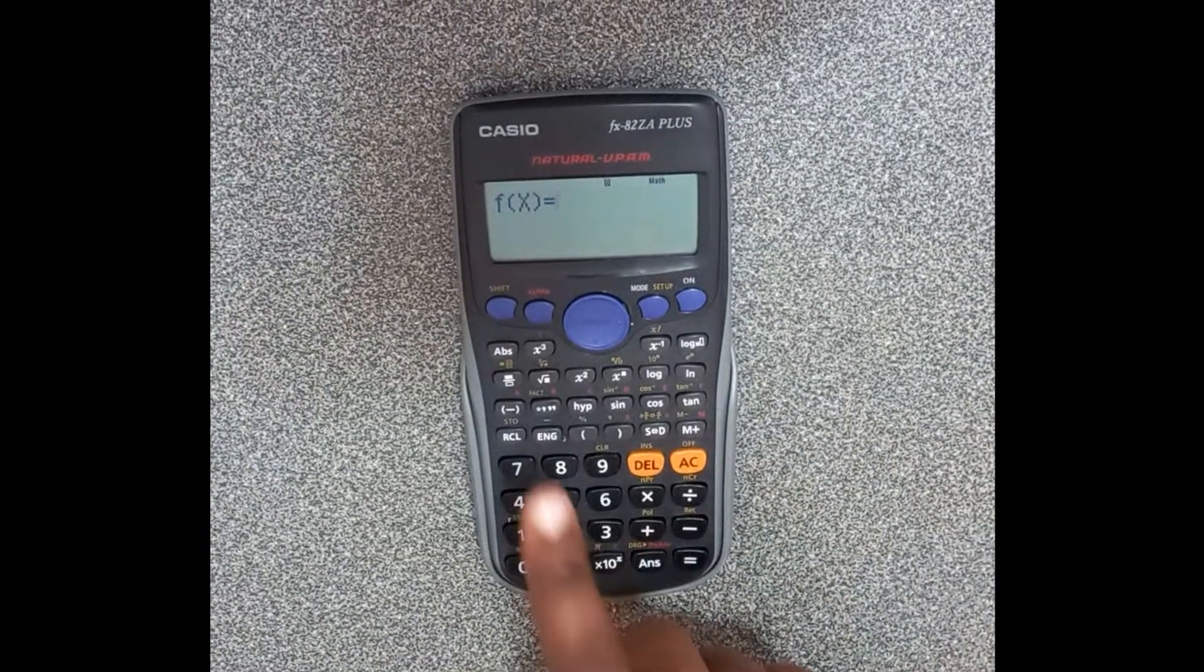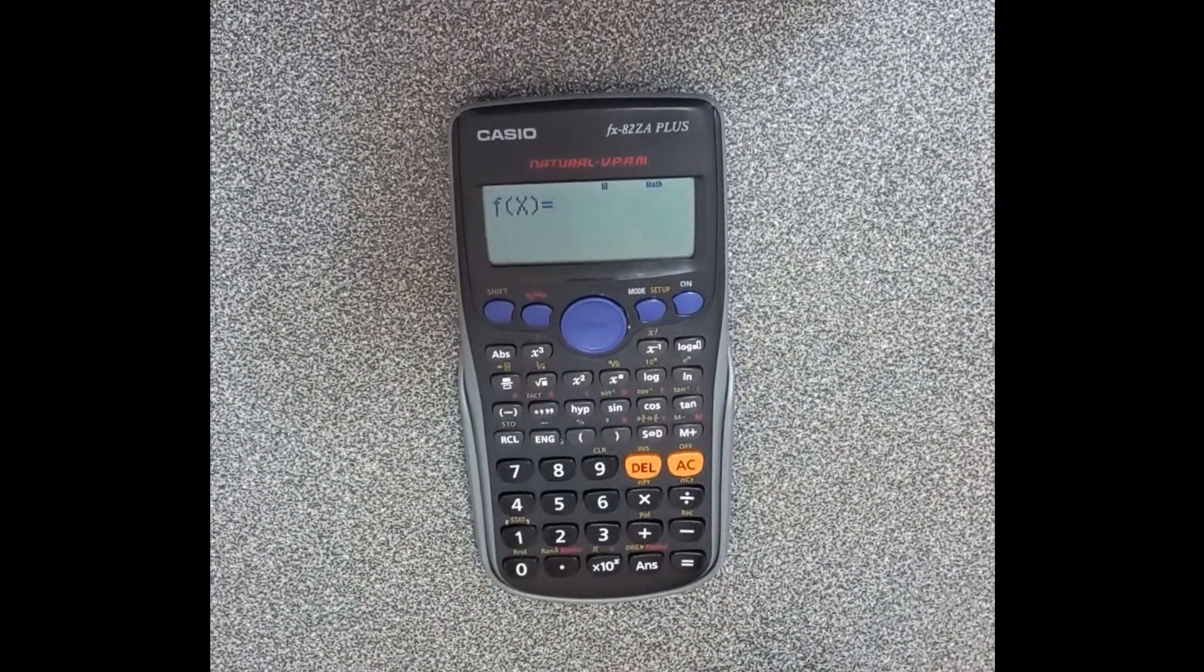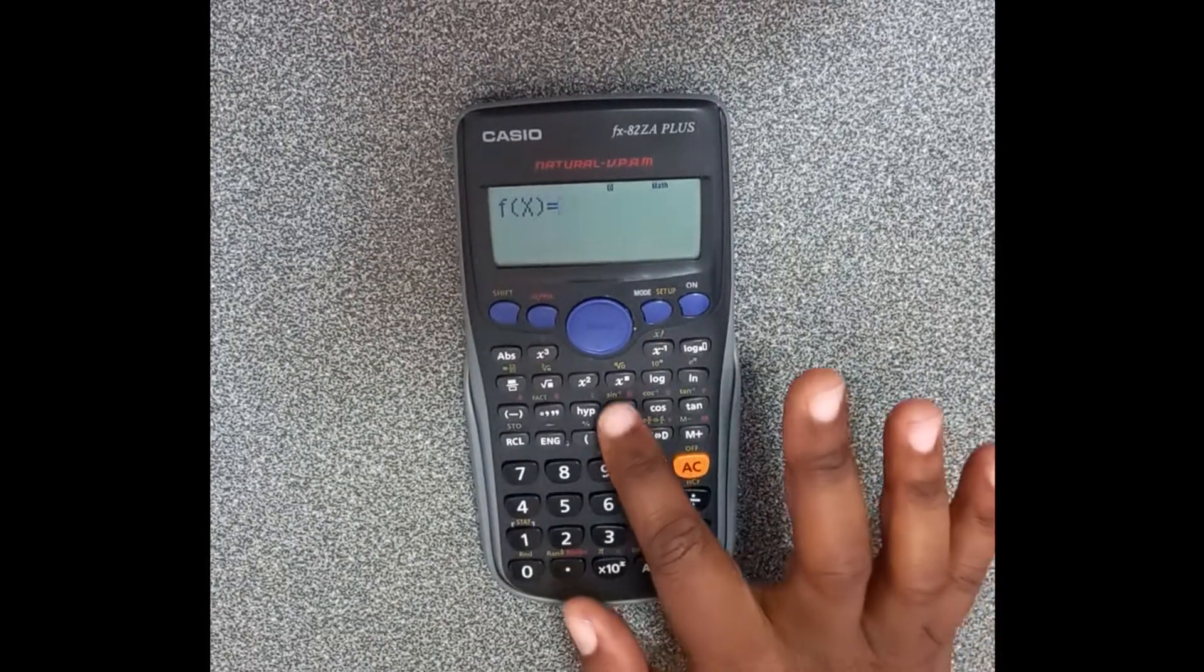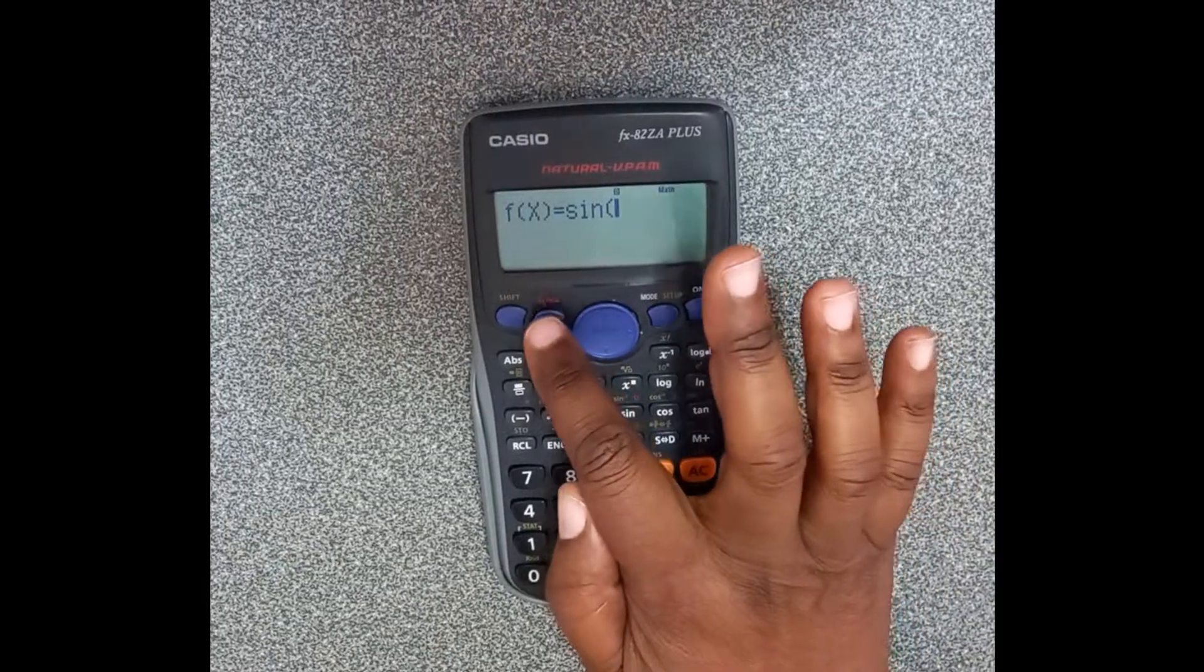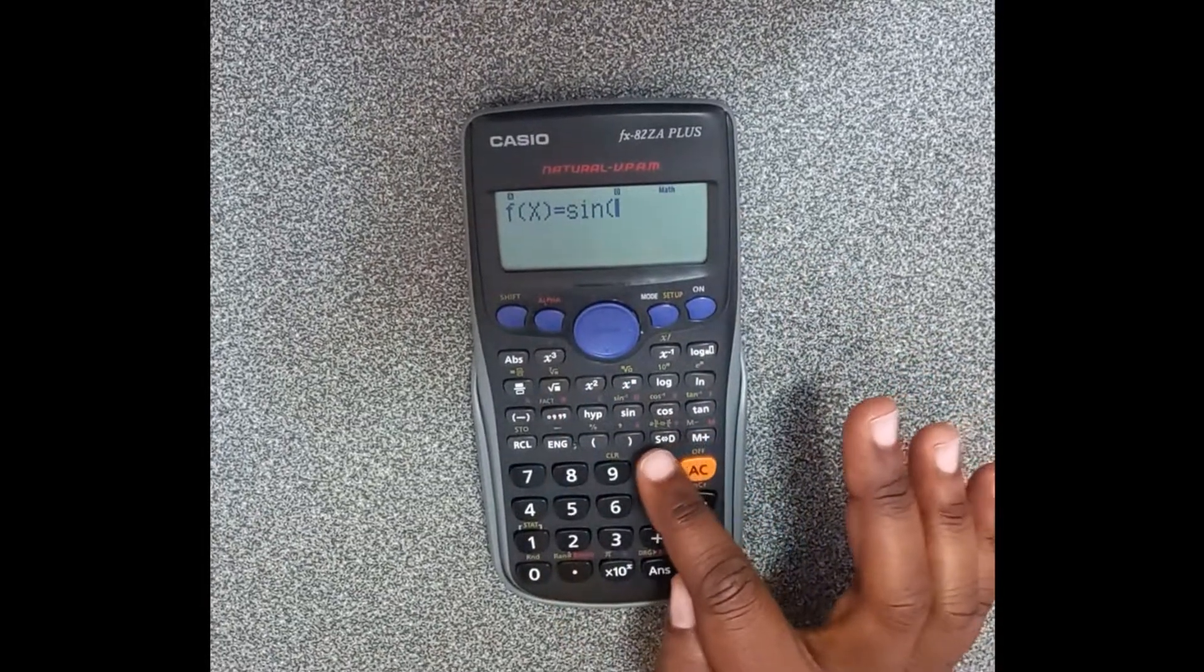It will give you f(x) is equal to. Here we're going to do the sine graph. You say sine, now you need your x. Your x would be alpha, that red thing alpha, and when you look at your calculator there's an x there.